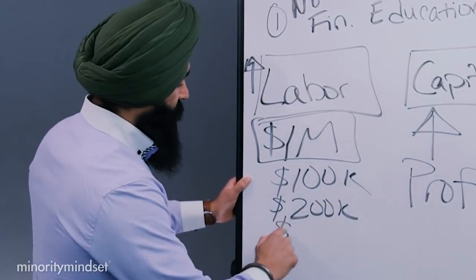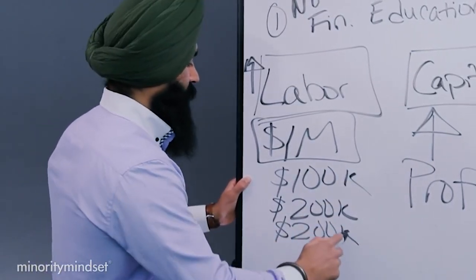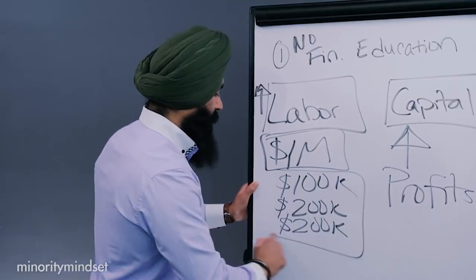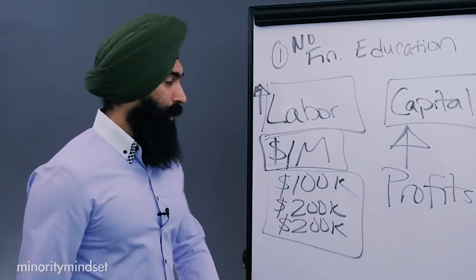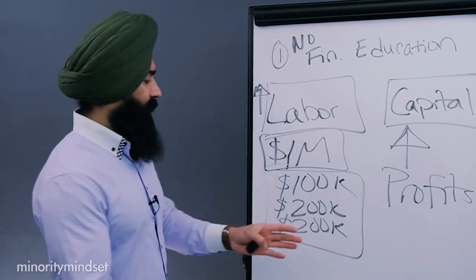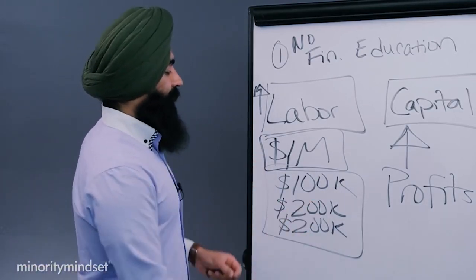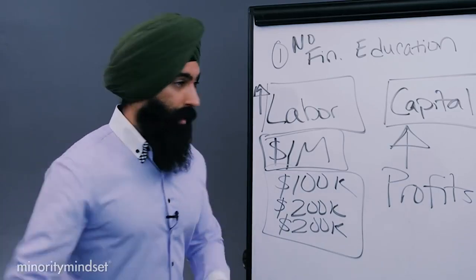And then I have another, say, $200,000 in other expenses. So I have to pay my CEO. I have to pay the people that mash the avocados. I have to pay for the salt, the pepper, and everything else. This all adds up to $500,000 in expenses.